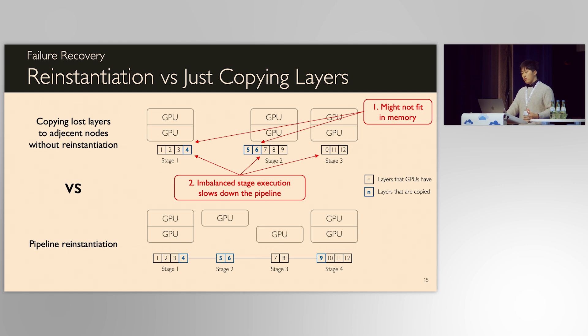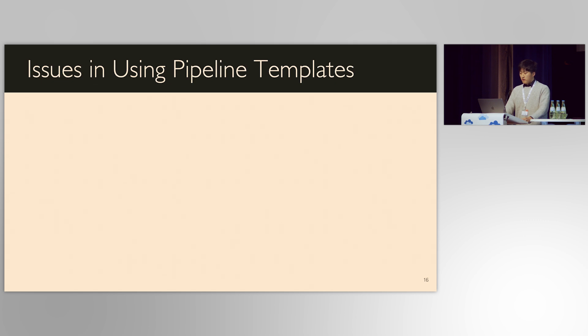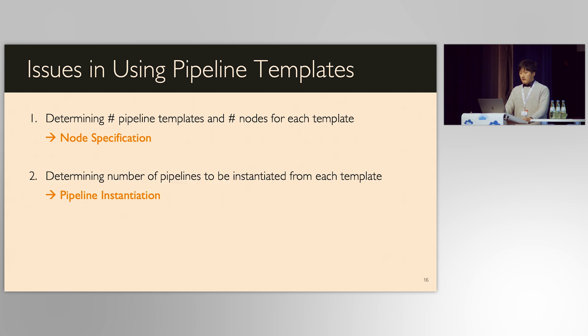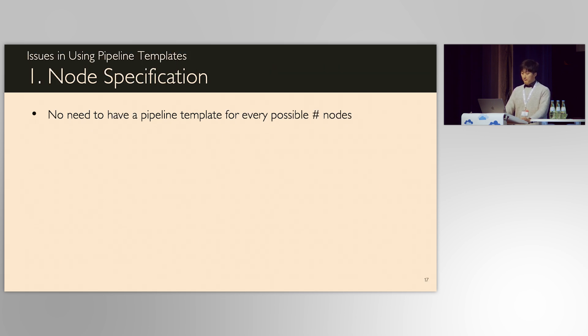Using pipeline template, we already have a guarantee that the model layers can fit in the given GPUs and their execution is well-balanced. Just using pipeline template is not enough for high throughput and fast fault tolerance. Let's see what more should be addressed. First, we need to determine the number of pipeline templates and their number of nodes specification. This is crucial for using all available nodes. Second, we need to determine how many actual pipelines need to be instantiated from each pipeline template. Third, we briefly introduced pipeline reinstantiation in a failure case, but there might not be a feasible pipeline template to be instantiated. We provide the pipeline merge as a solution for such case.